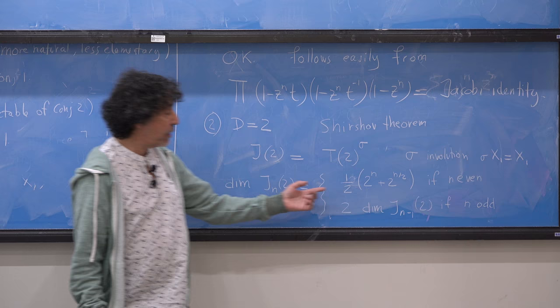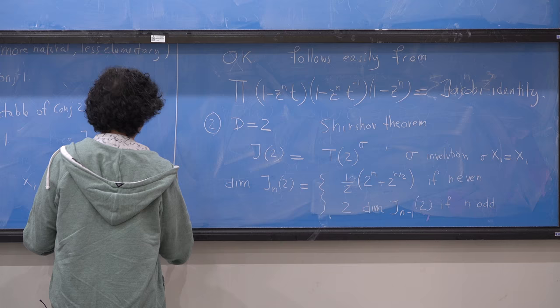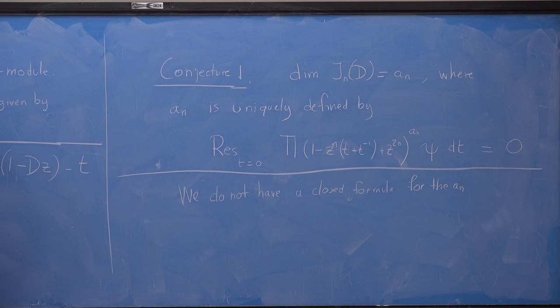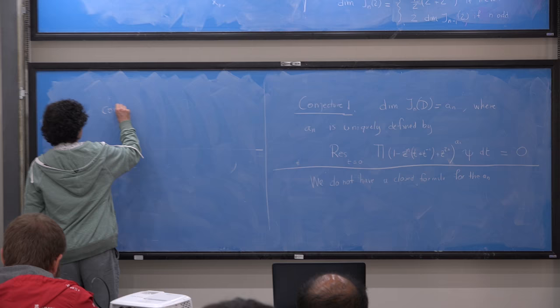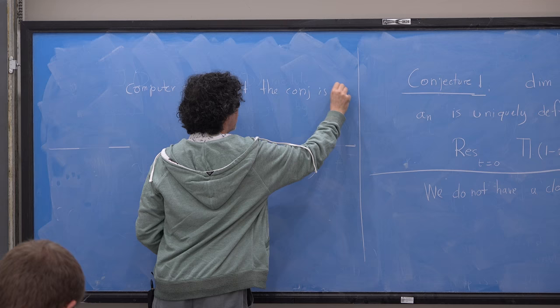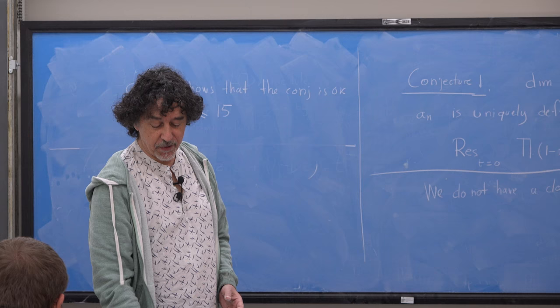So with two generators there is an explicit formula for the dimension. We have been able to prove and the computer shows that the conjecture is correct for N less than or equal to 15 — we stopped the computation at some point. But the more interesting case is D equal to 3.